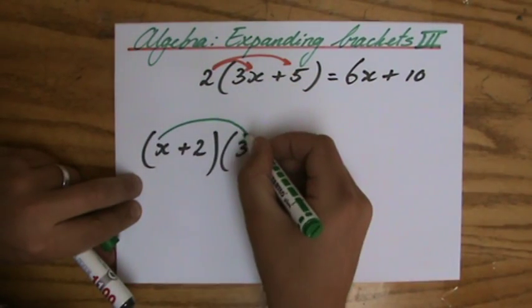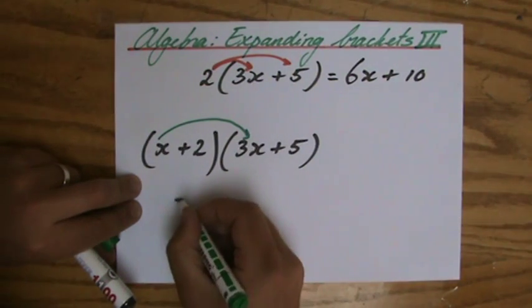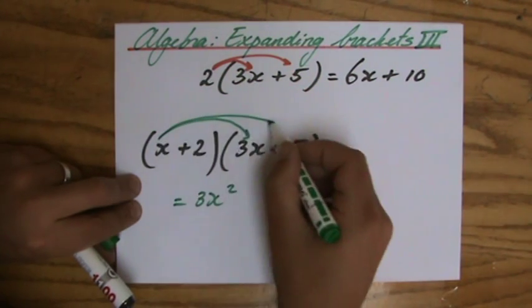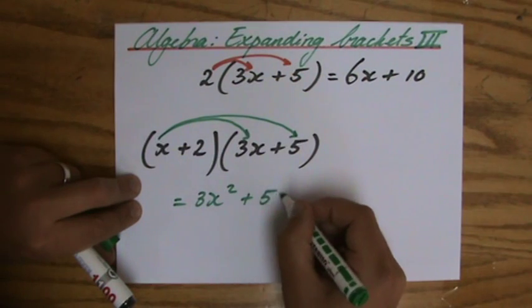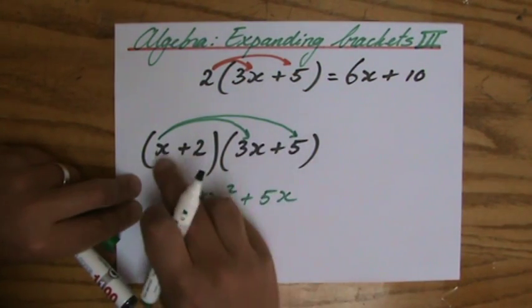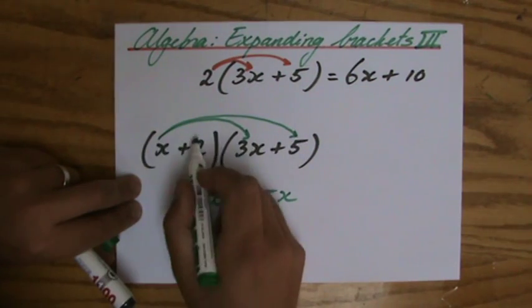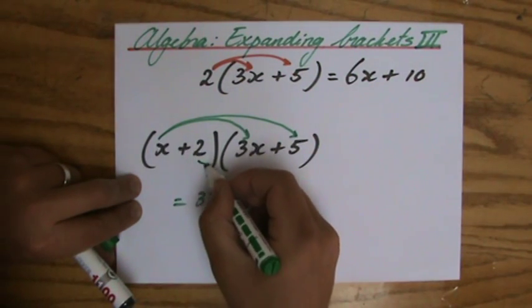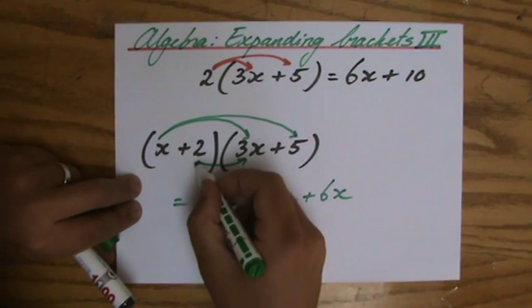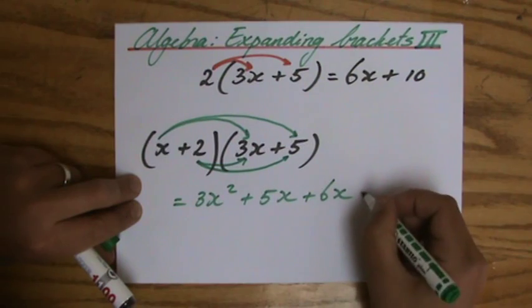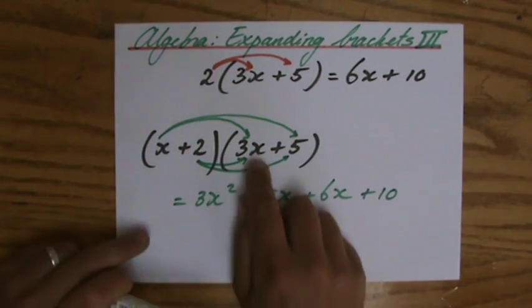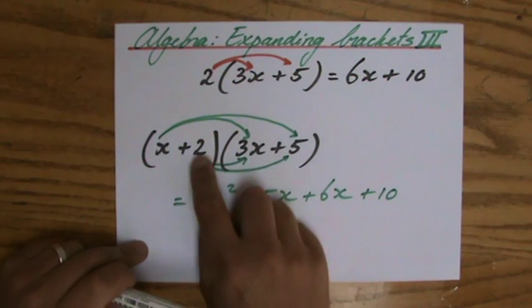So x times 3x gives 3x squared. x times 5 gives 5x. I've now multiplied both terms by x, so I'm finished with x. Now with 2: 2 times 3x is 6x, and 2 times 5 is positive 10. I've now multiplied both terms by 2.